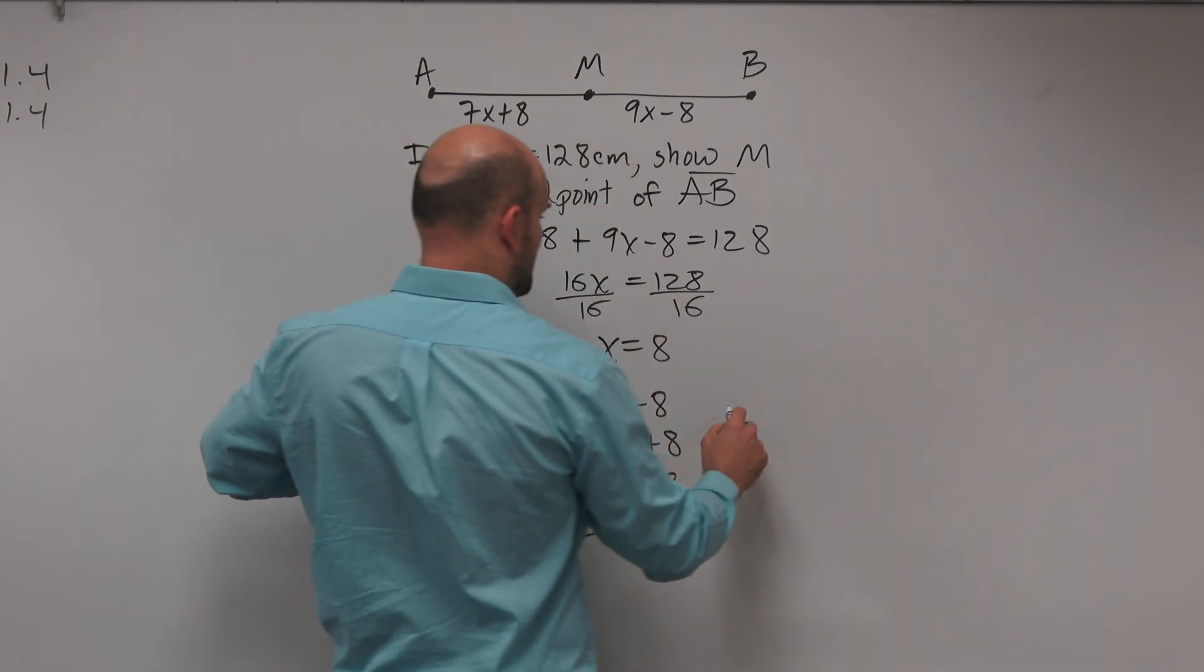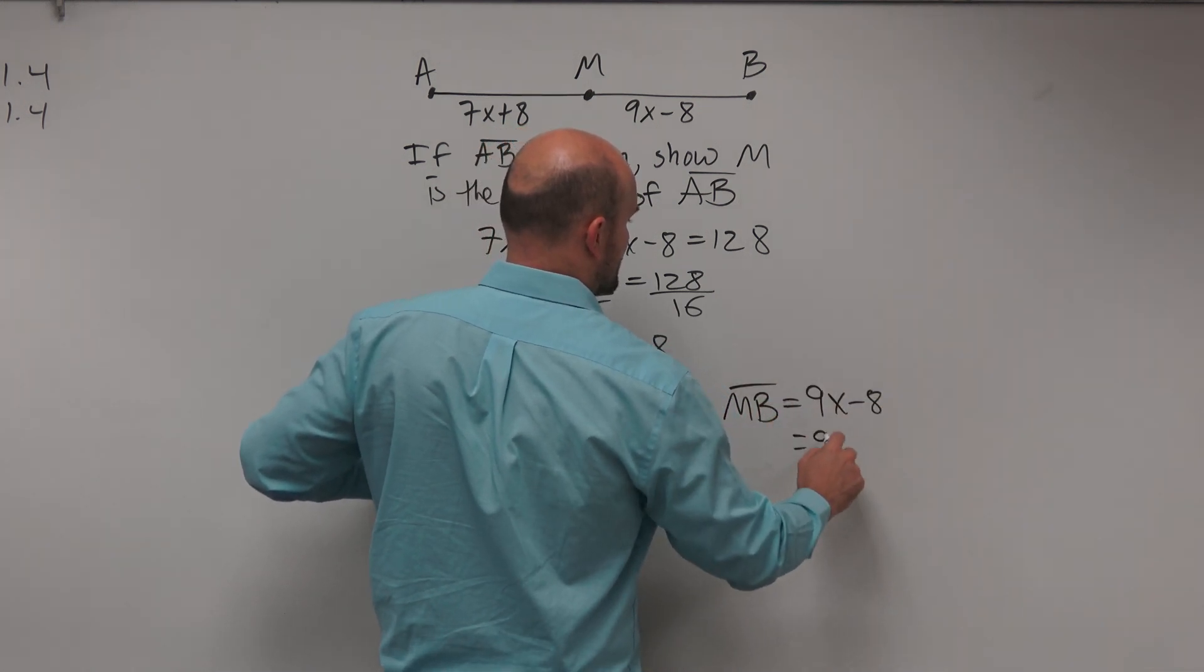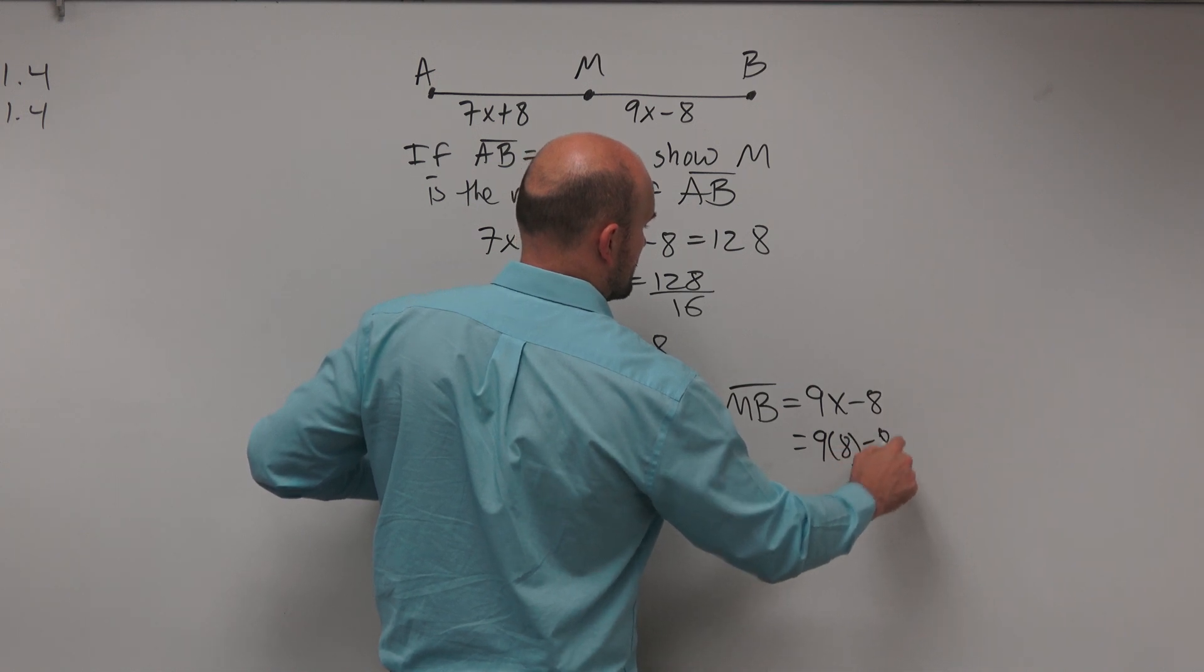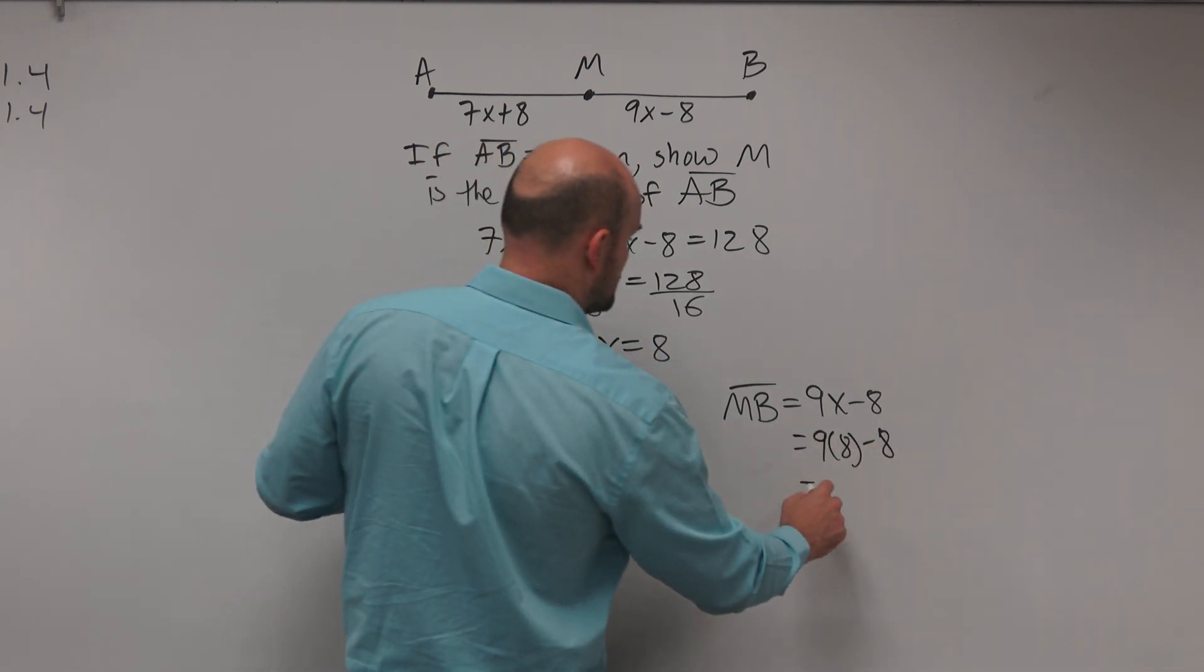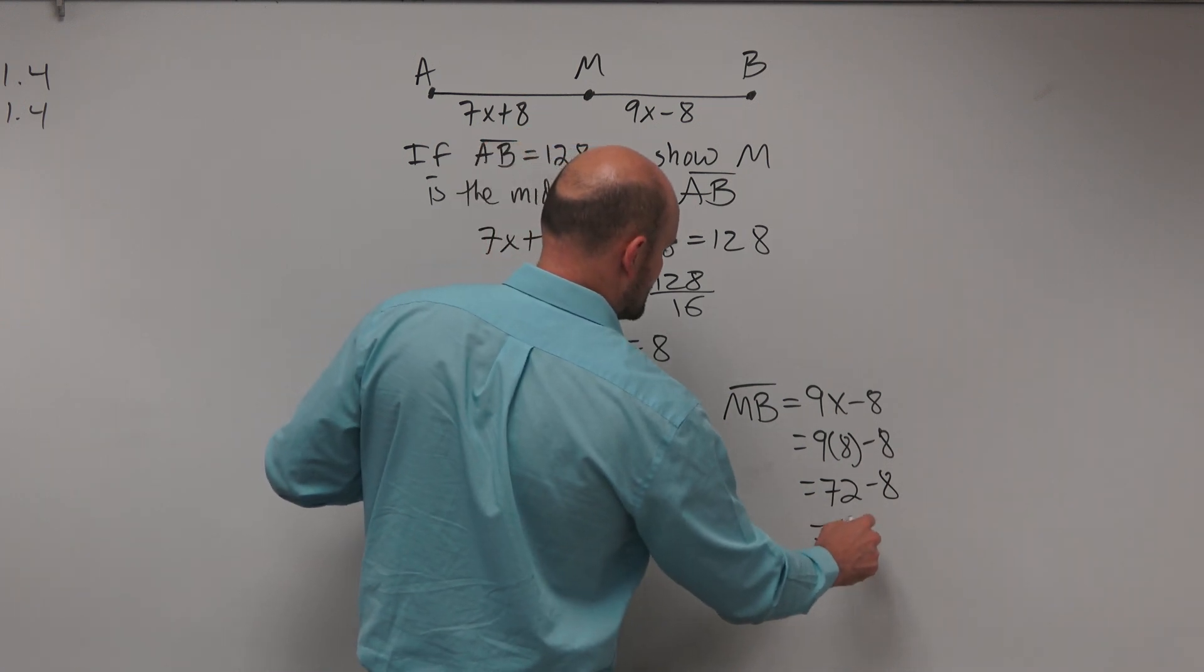Now let's find MB. MB equals 9x minus 8. Plugging in 8: 9 times 8 minus 8 equals 72 minus 8, which is also 64.